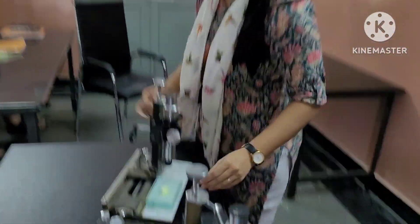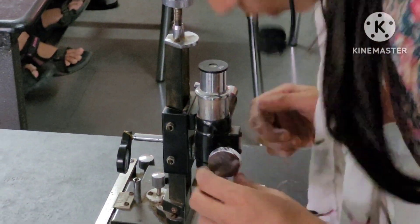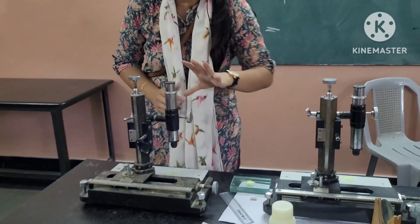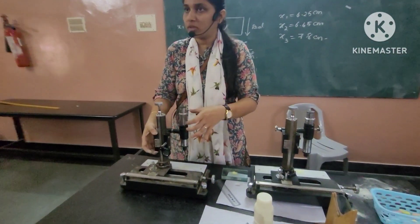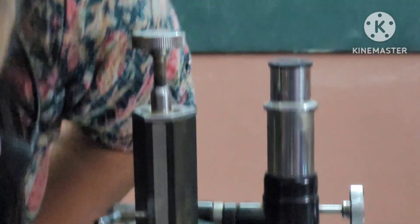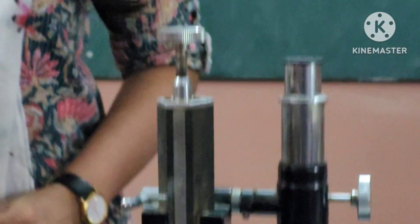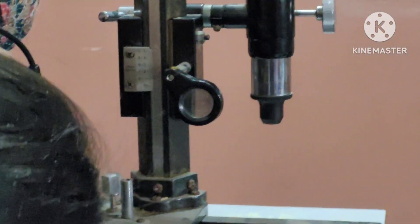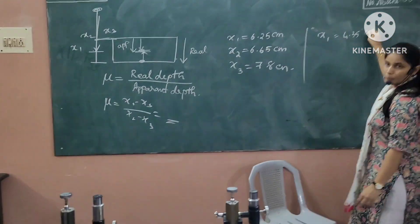We will take a second reading. For the second reading, you will remove the glass slab, then fix this at any new position and lock it up. Then you adjust the eyepiece again. Once we have fixed the new position and adjusted the eyepiece, you will now take the reading. I am getting 4.35. So the second set of readings, X1 is equal to 4.35 centimeter.